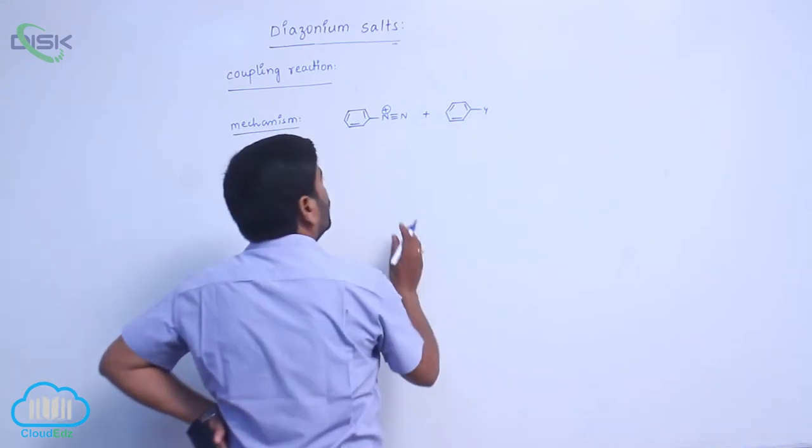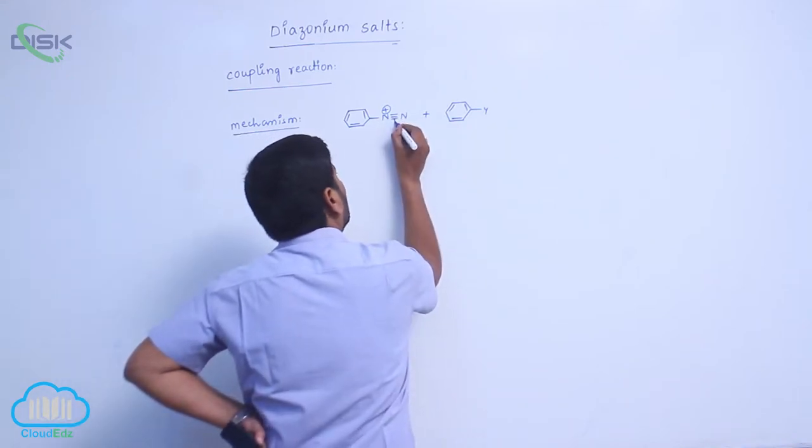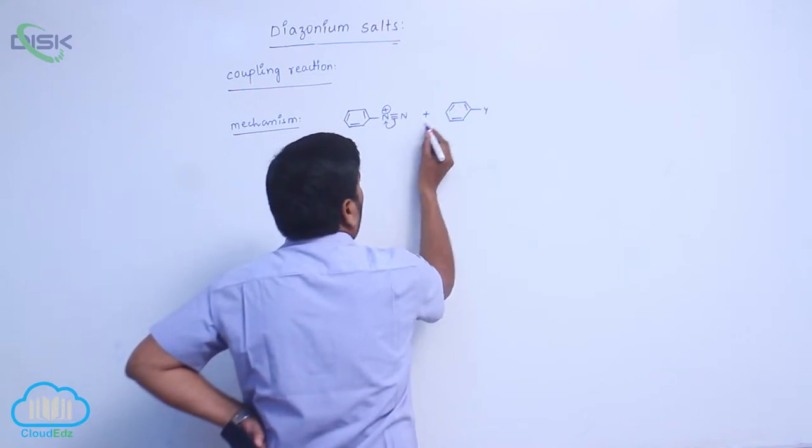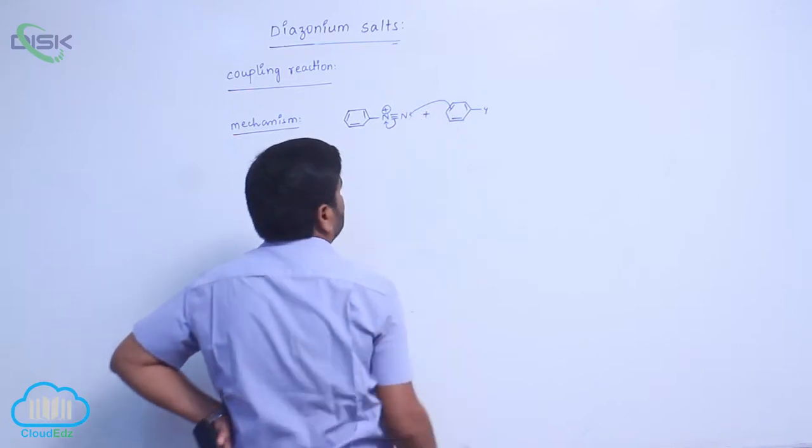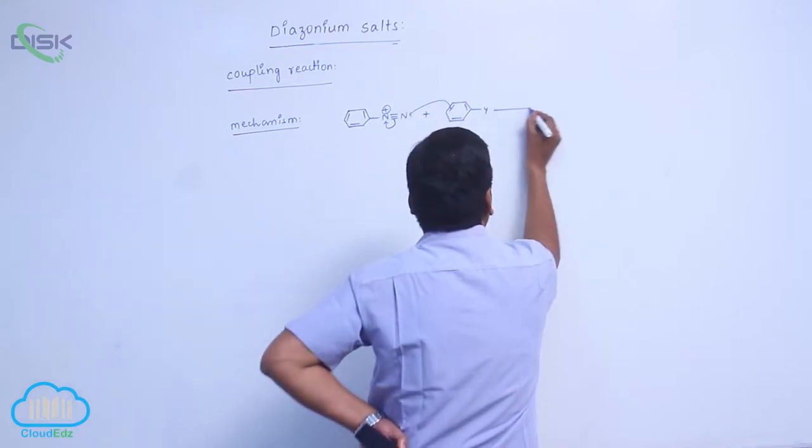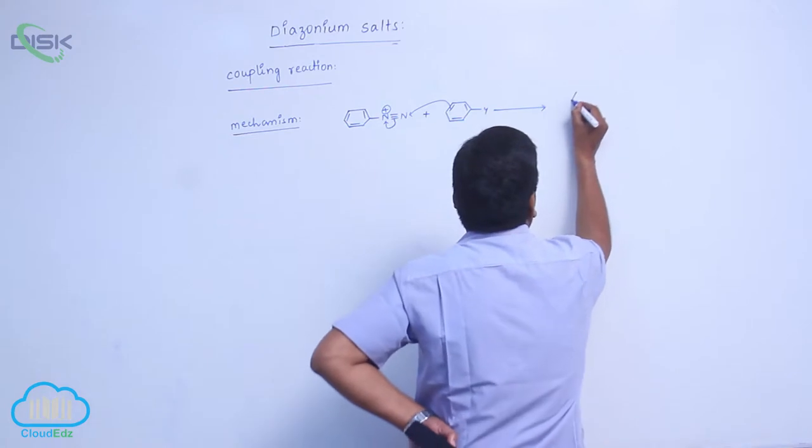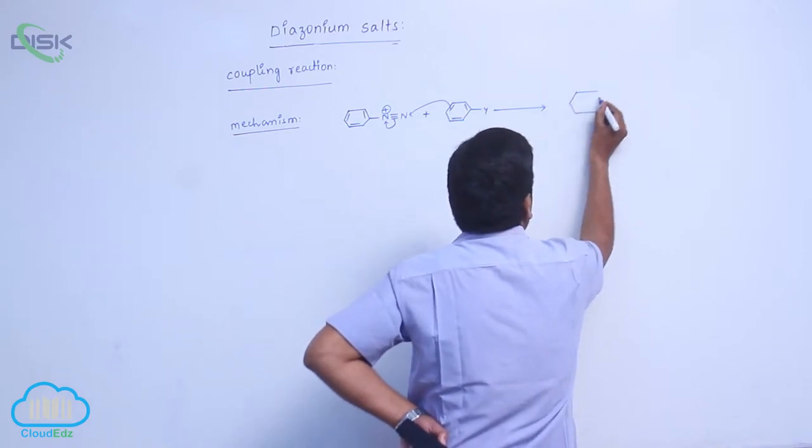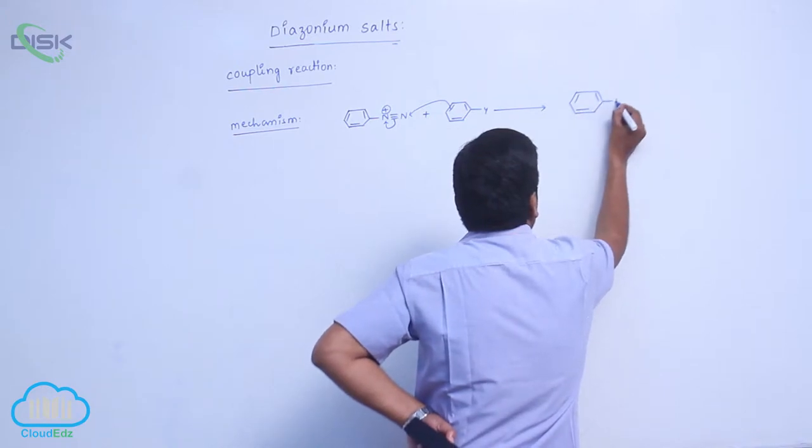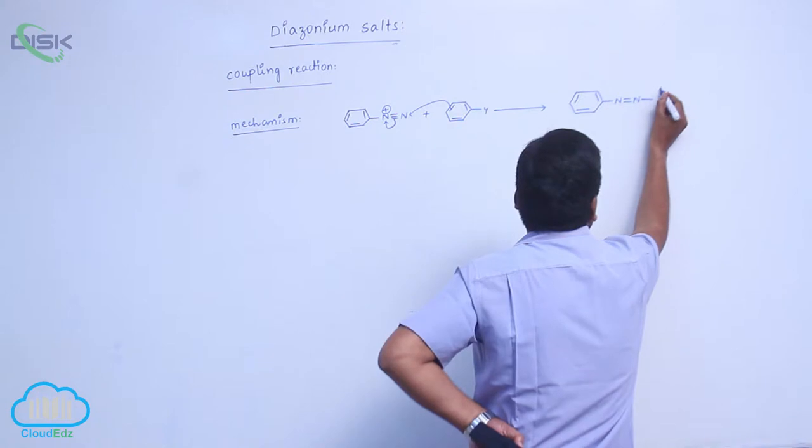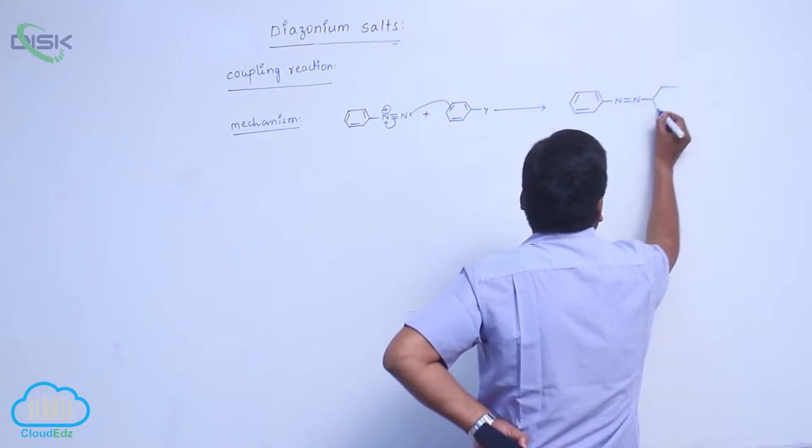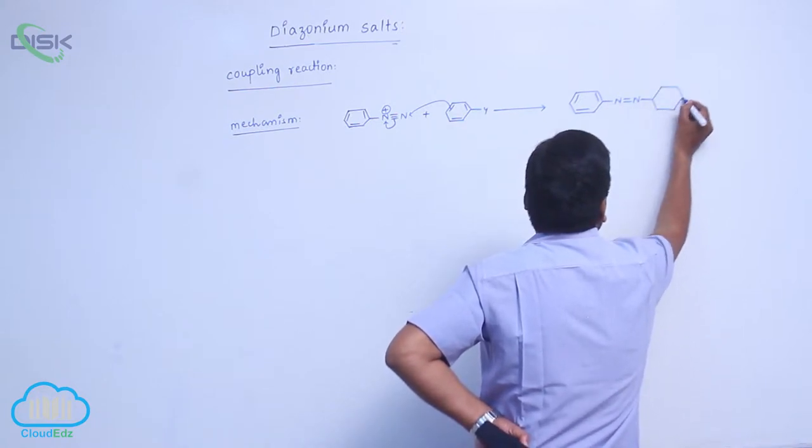Now, due to polarization of this particular bond here, now this pi-electron cloud will attack on nitrogen. Double bond here, N double bond N, R is Y.